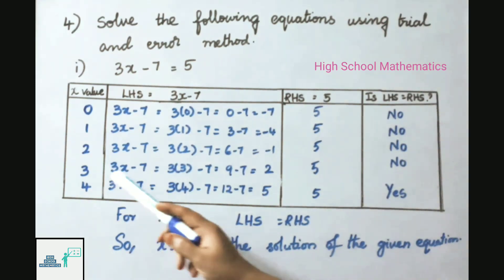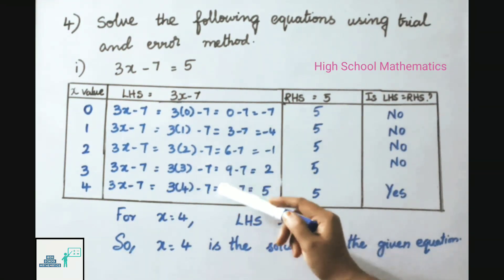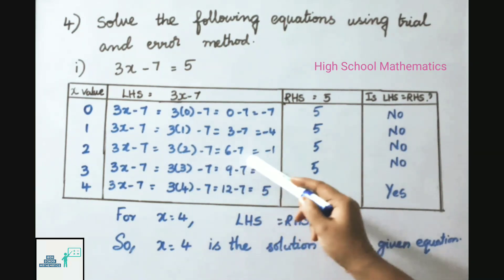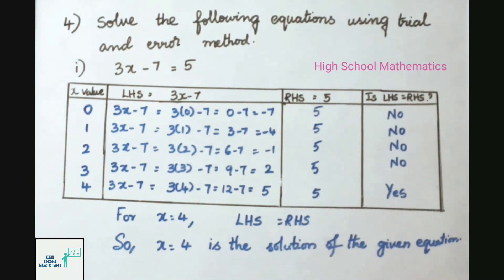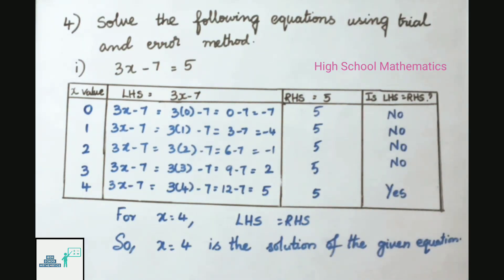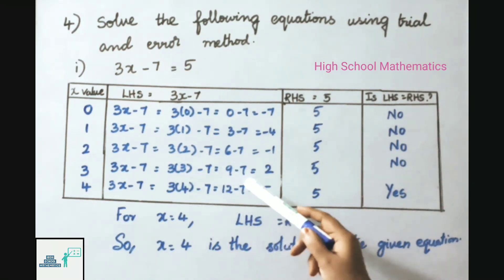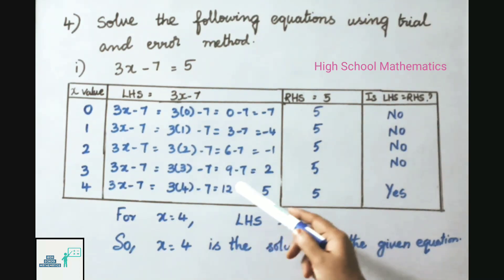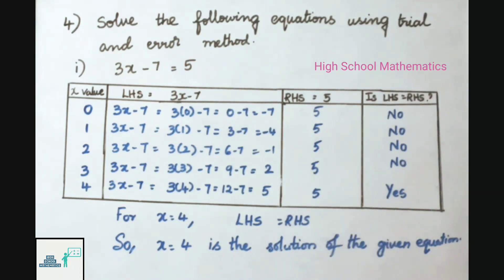For x = 3: LHS = 3(3) − 7 = 9 − 7 = 2; RHS = 5; not equal.